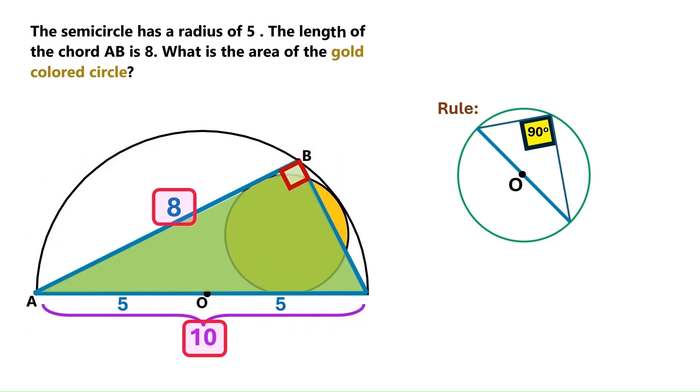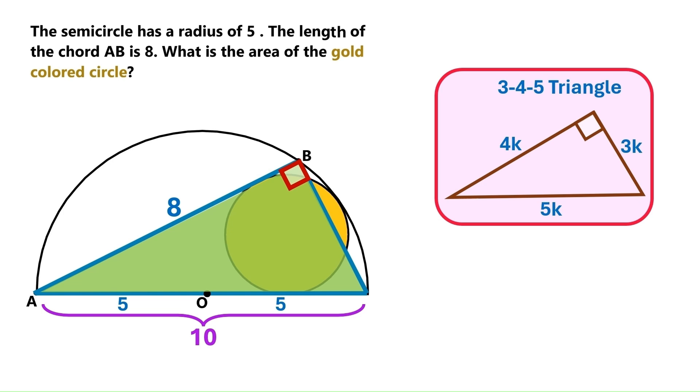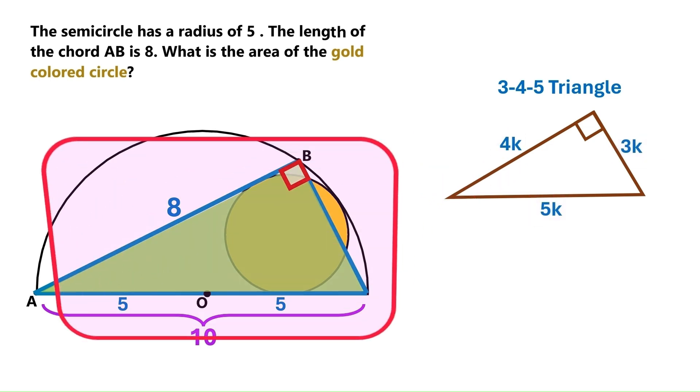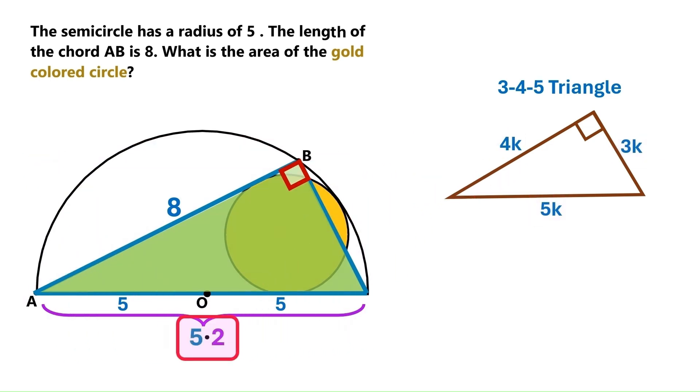We know two of this right triangle's sides are 8 and 10, and that tells us it must be what's called a 3-4-5 triangle, which is basically a right triangle with side lengths in the ratio of 3-4-5. In our right triangle, the hypotenuse is 5 times 2 and this leg is 4 times 2. So it's clear that this side has to be 3 times 2, which is 6.